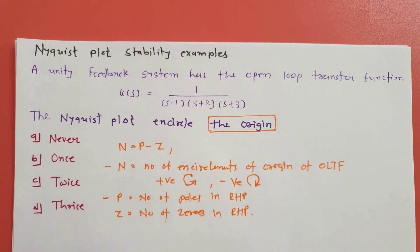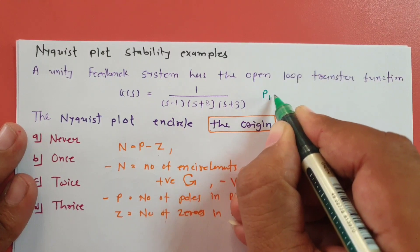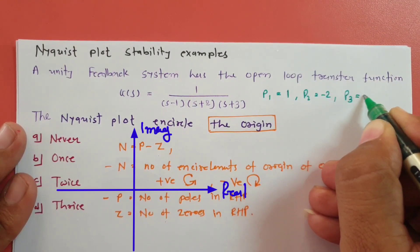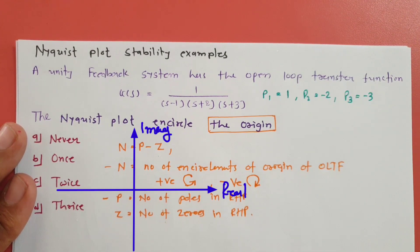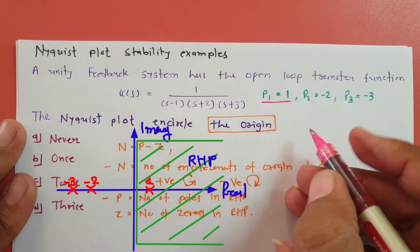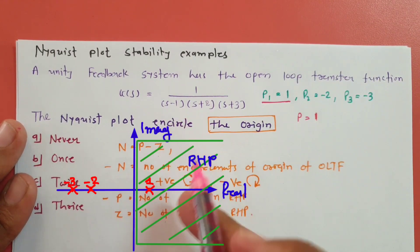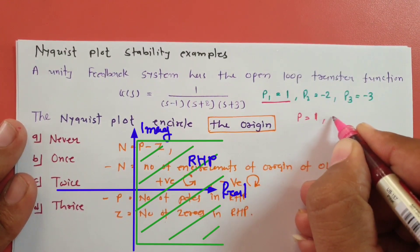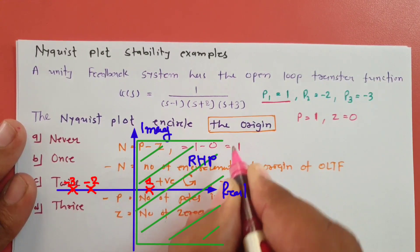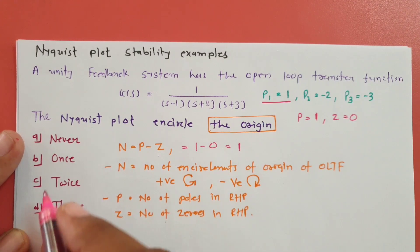Here we have three poles. Observing their locations: one pole is at +1, the second is at −2, and the third is at −3. Only one pole — at +1 — is in the RHP, so P = 1. There are no zeros in the system, so Z = 0. Therefore N = P − Z = 1 − 0 = 1. The Nyquist plot encircles the origin once.